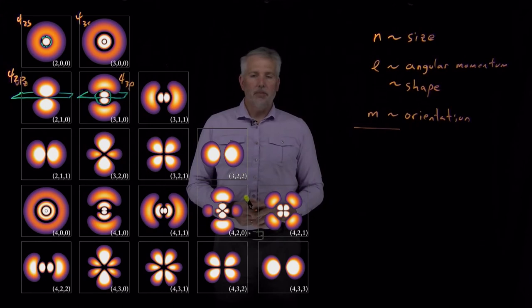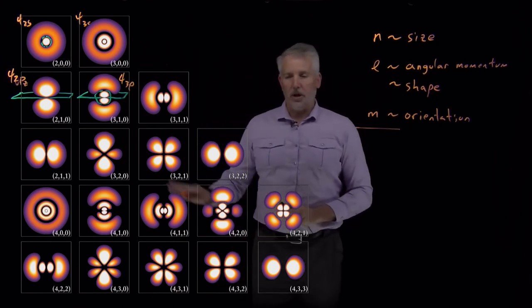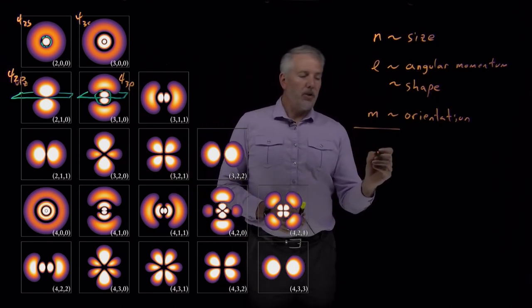The next thing that's important to understand if we want to sketch an arbitrary orbital is we need to understand how many nodes to draw.